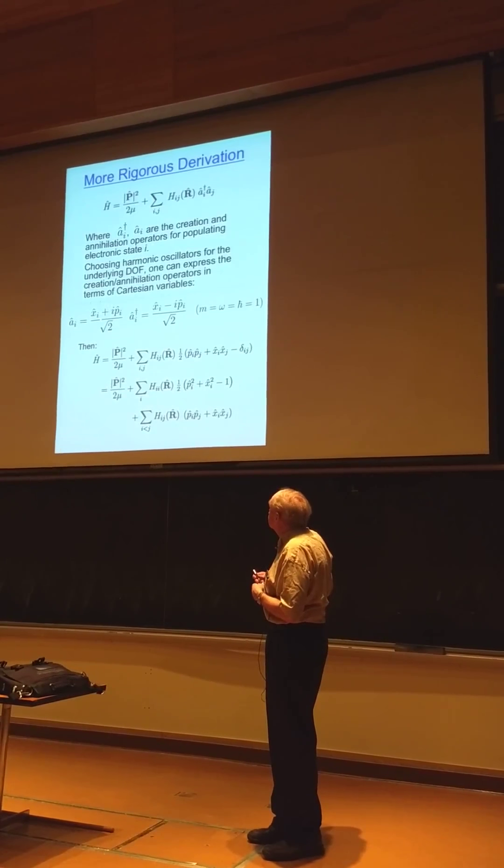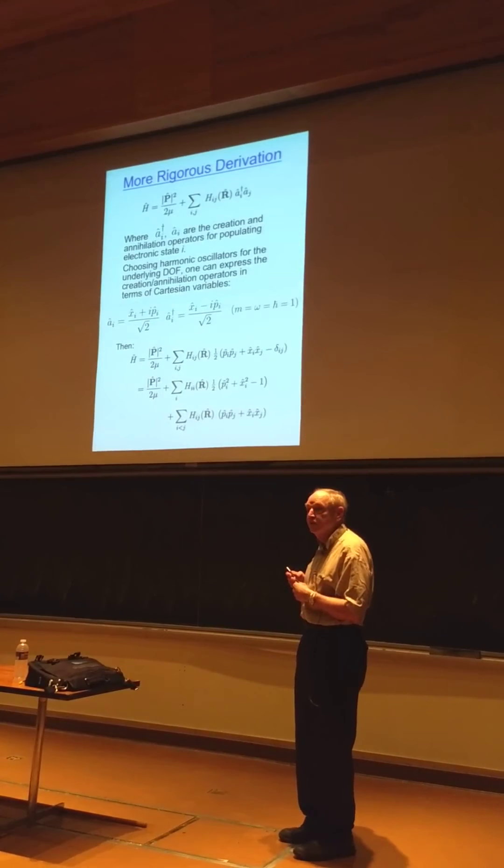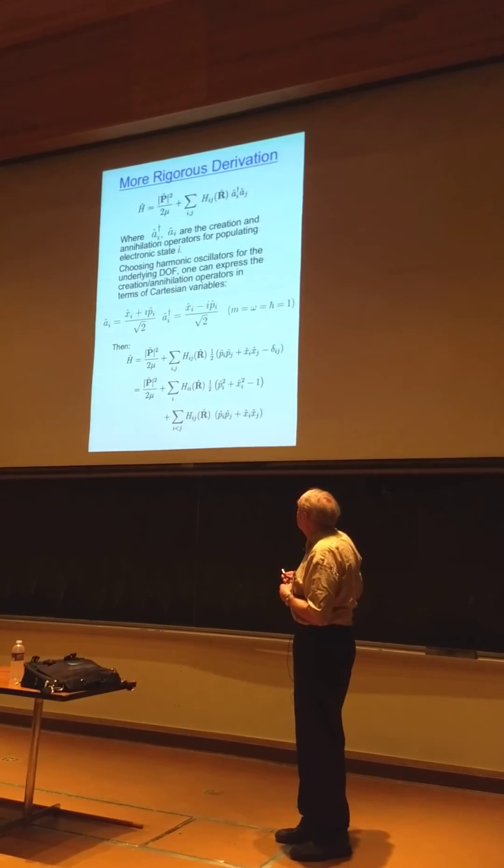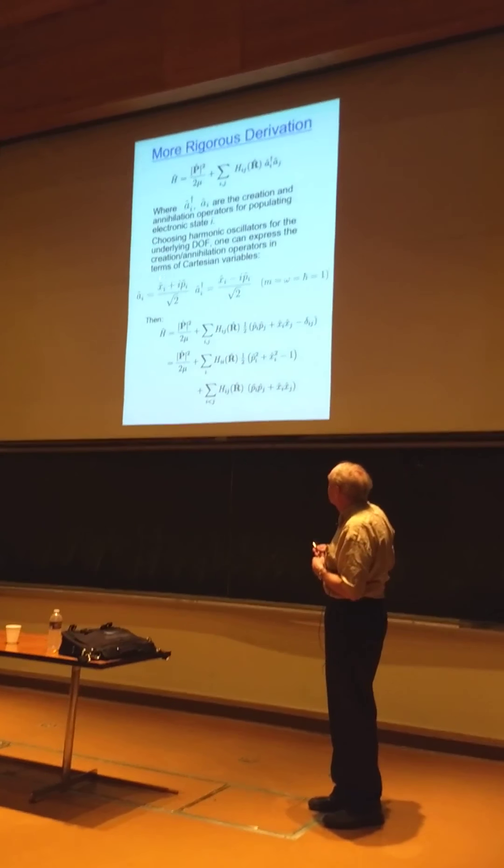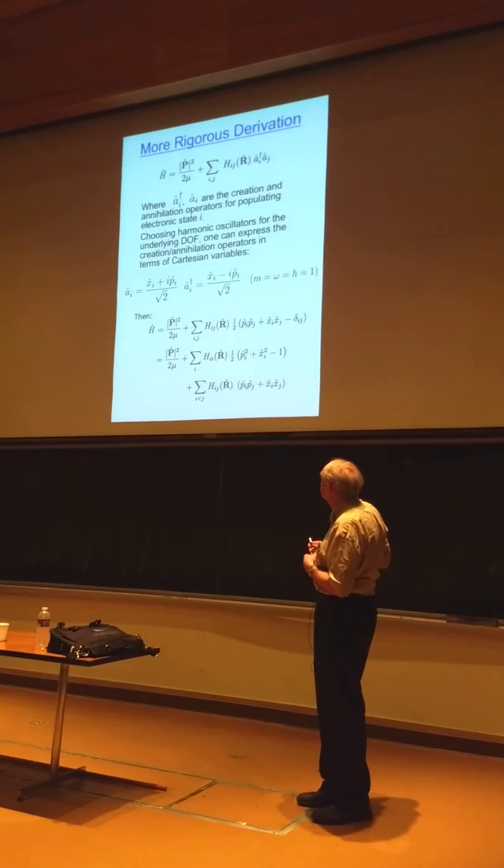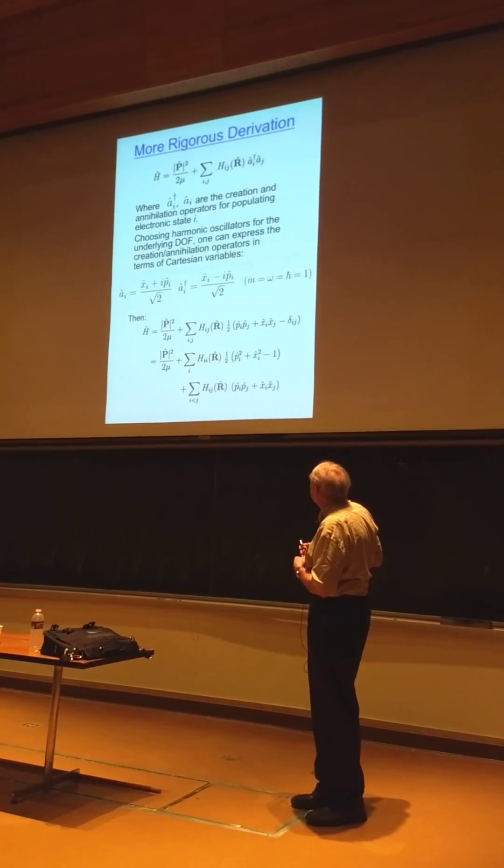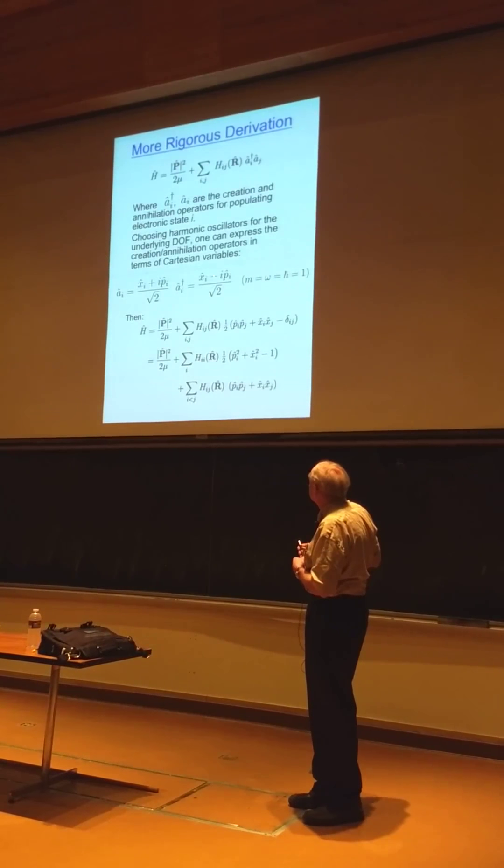Then we can write, then we know what the raising and lowering operators are for a harmonic oscillator, freshman quantum mechanics. And in terms of the Cartesian coordinates for the oscillator, these are the raising and lowering operators, again, for each electronic state. And if we replace a and a dagger by these Cartesian-like operators, we get this Hamiltonian operator.